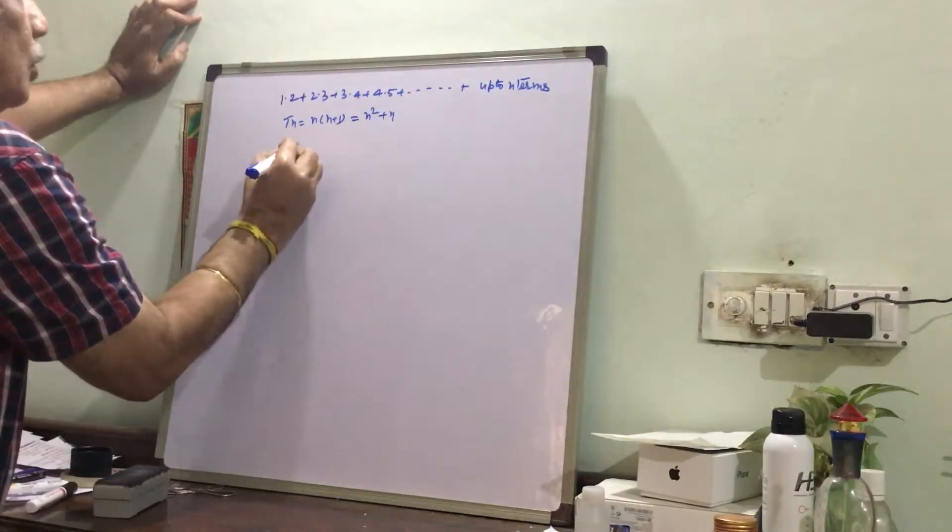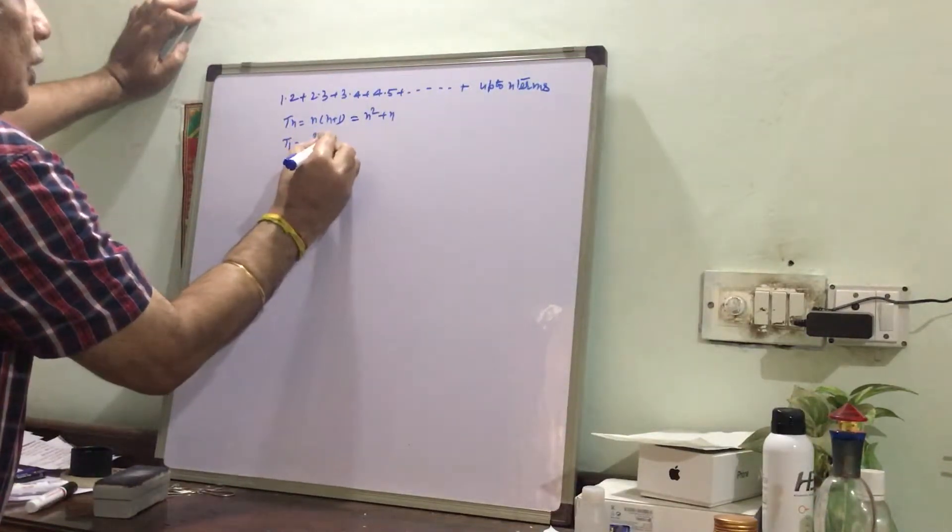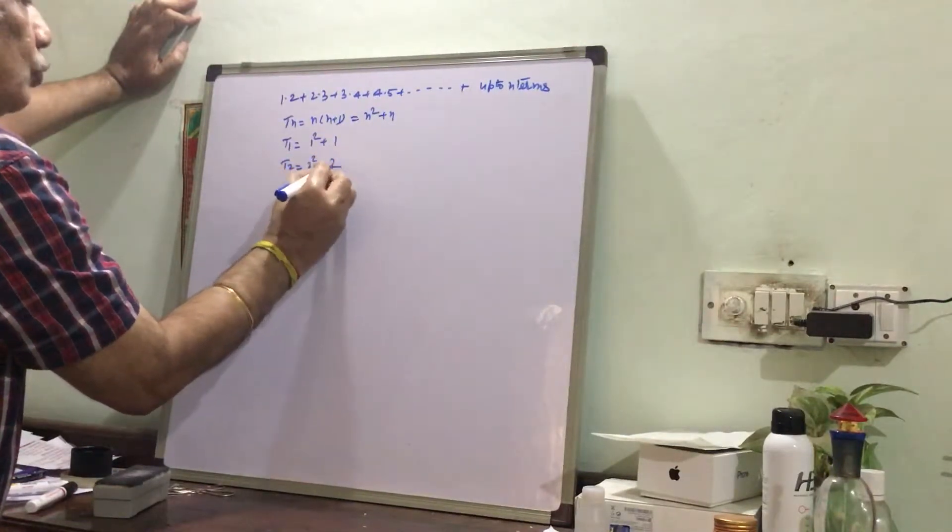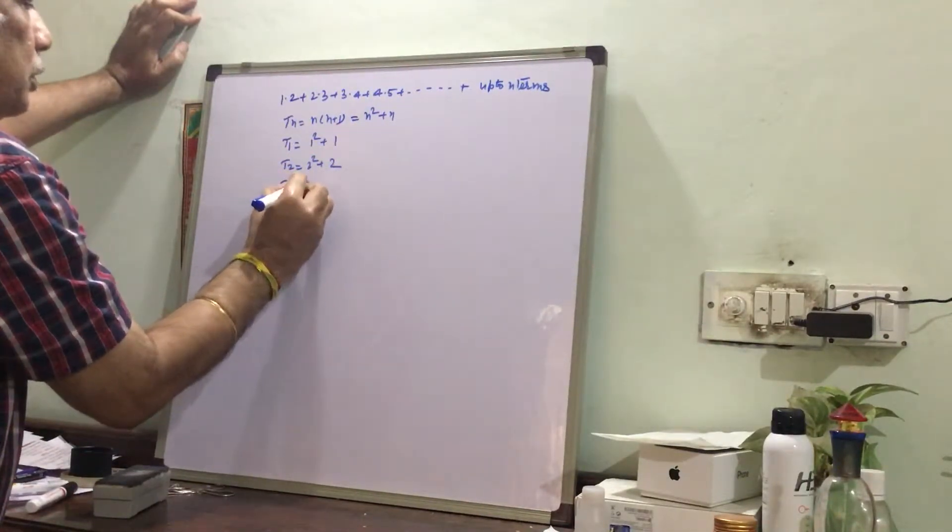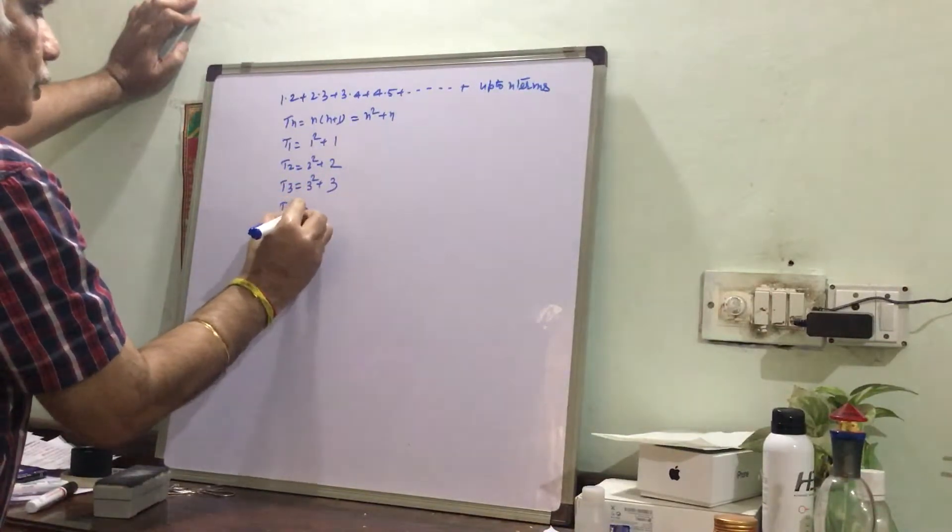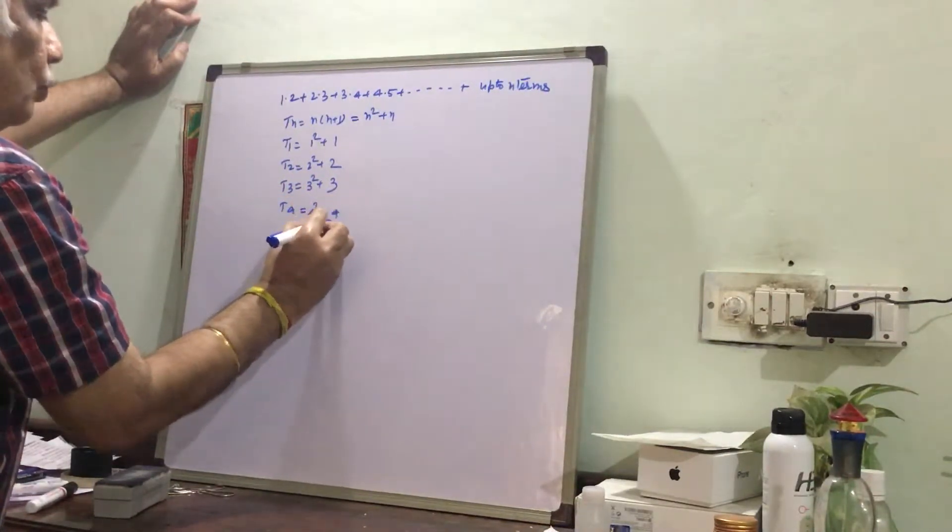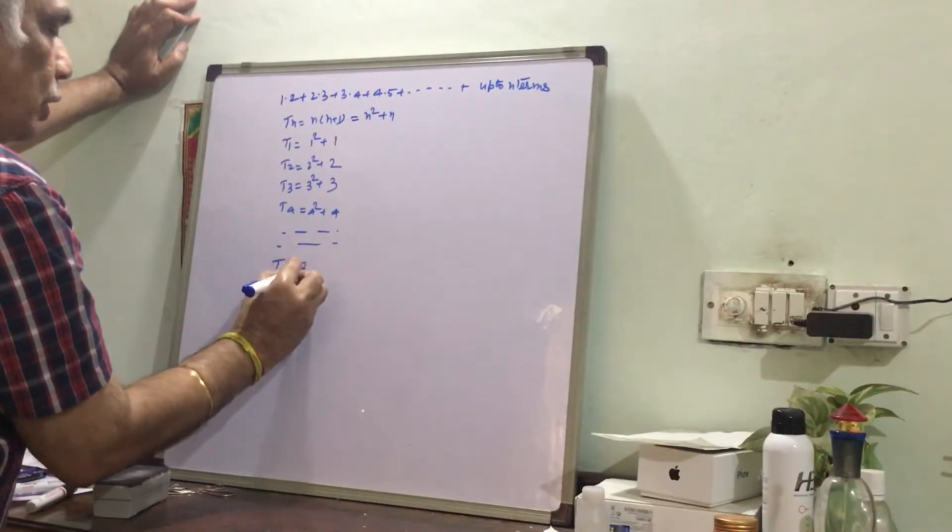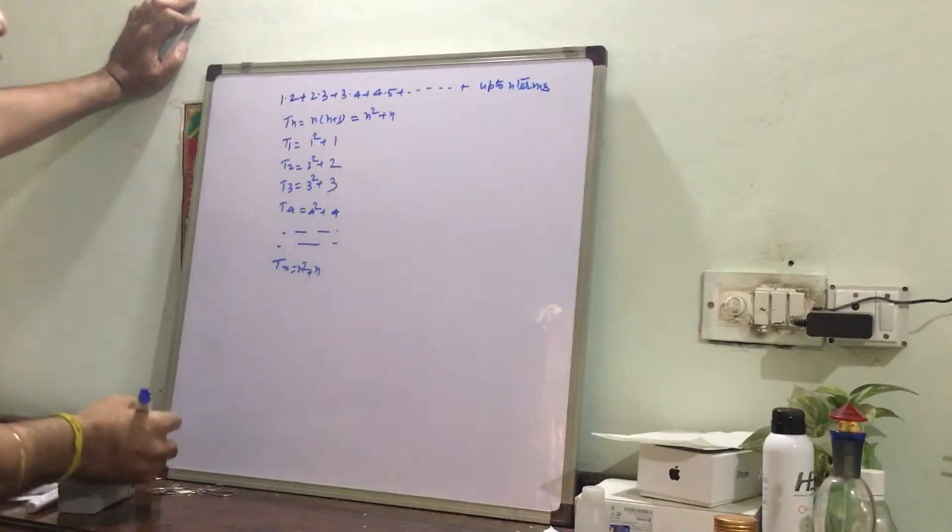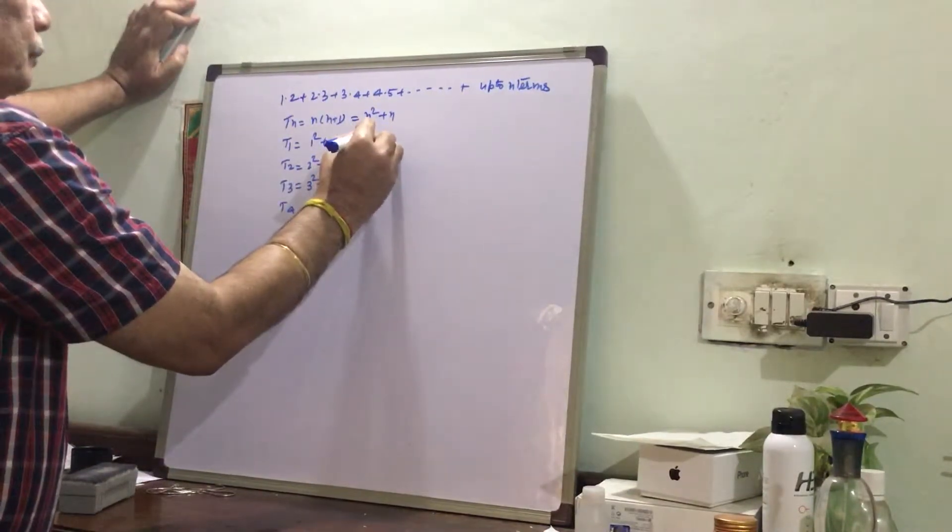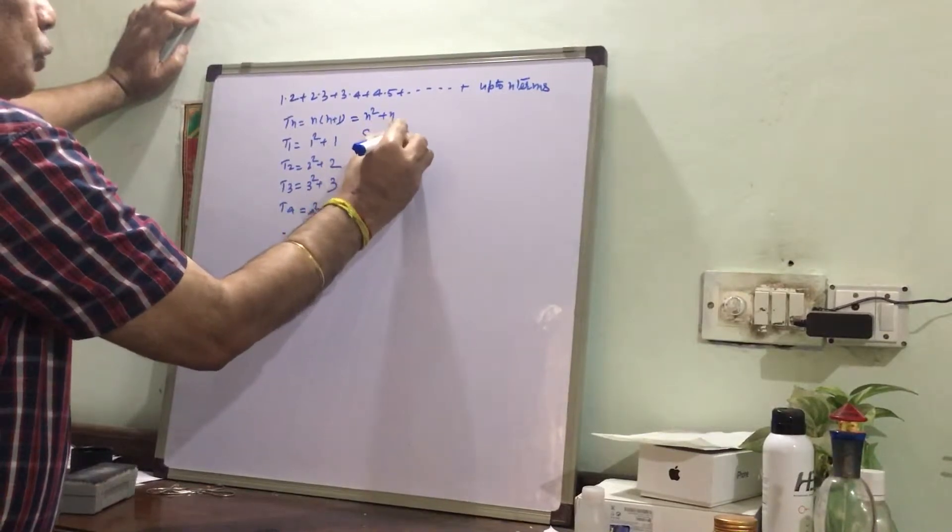See, this is n² plus n, so we can write T1 equal to 1² plus 1, T2 equal to 2² plus 2, T3 equal to 3² plus 3, T4 equal to 4² plus 4. This way we can go on writing Tn is equal to n² plus n.